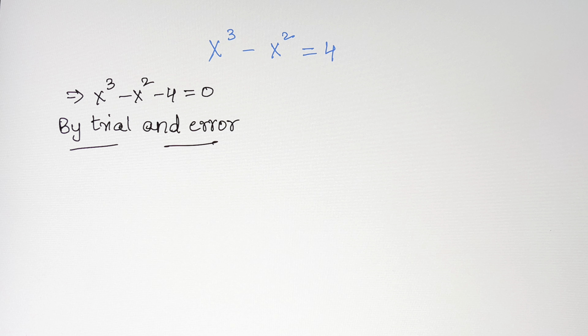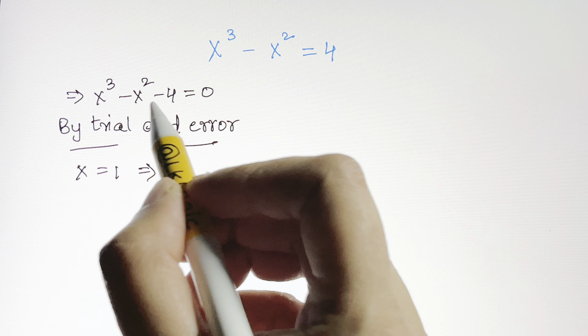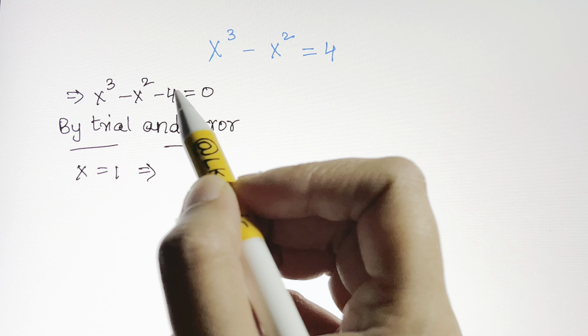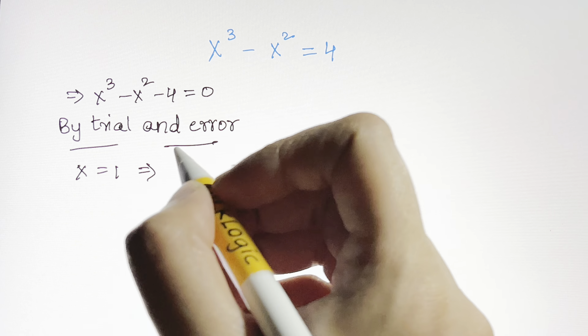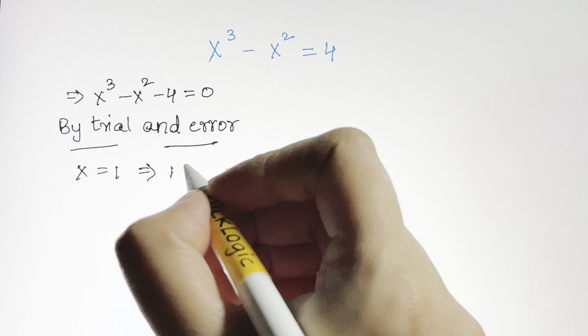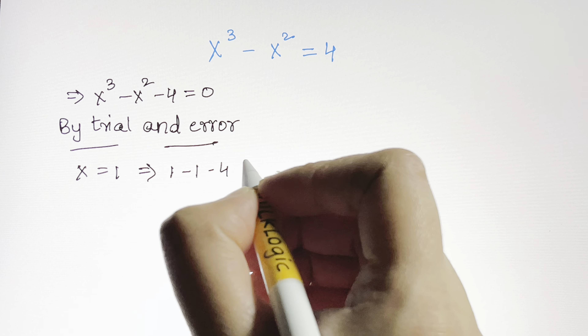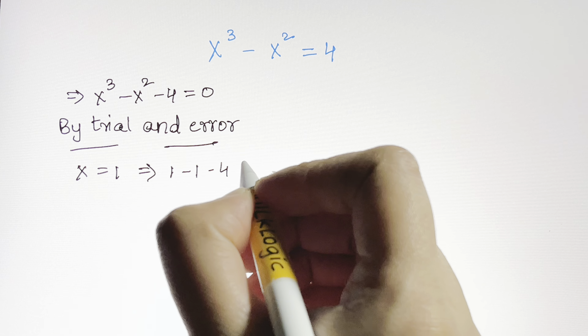By the trial and error method, let's take some values of x one by one, starting with the least and going ahead. When x equals 1 and we substitute 1 in, 1³ is 1, minus 1² is 1, minus 4 — that is 1 minus 5 — which is not equal to 0.